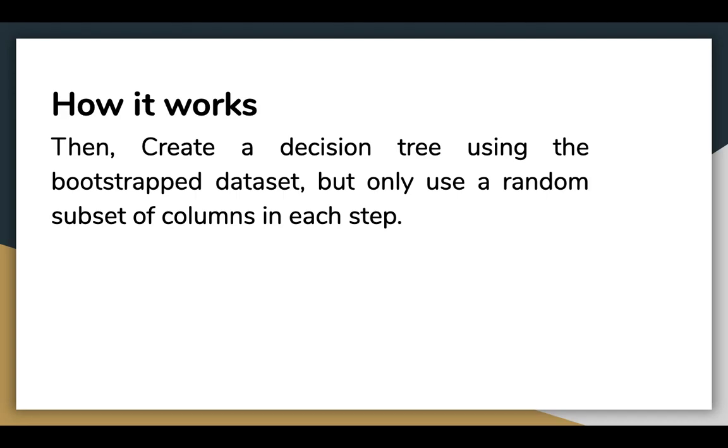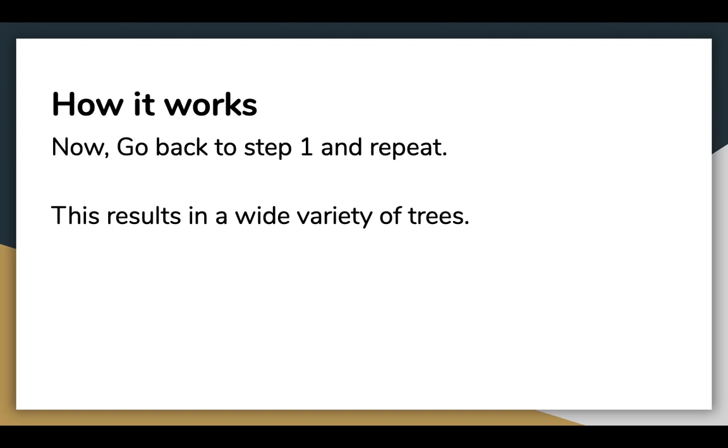Then create a decision tree using the bootstrap dataset, but only use a random subset of columns at each step. Now go back to step one and repeat. Make a new bootstrap dataset and build a tree considering a subset of variables at each step. This results in a wide variety of trees.